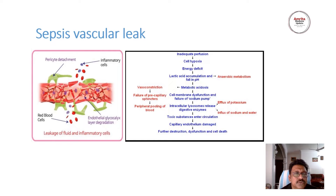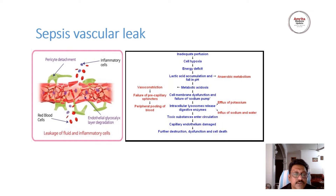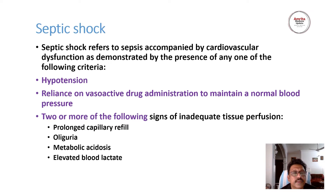Whenever there is an infection, especially when the patient goes into sepsis and septic shock, there is one important mechanism that produces all the complications — this is vascular leak. The chart shows inadequate perfusion, cell hypoxemia, energy deficit, lactic acid accumulation, metabolic acidosis, cell membrane dysfunction and failure of sodium pump, intracellular lysosomes releasing digestive enzymes, and toxic substances entering the circulation. Then capillary endothelium is damaged, producing small openings in the blood vessels — this is vascular leak, one of the key pathophysiology of septic shock. Intravascular volume is depleted through these vascular pores and shifts outside the intravascular compartment.